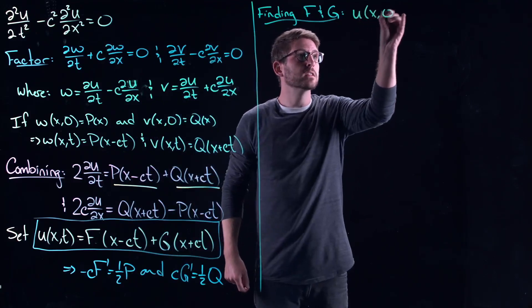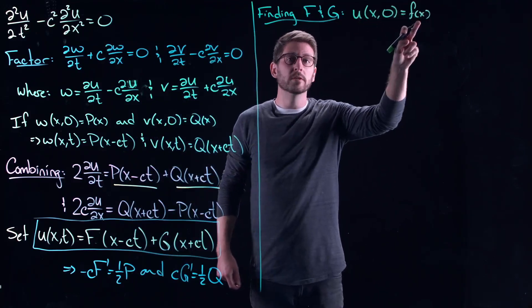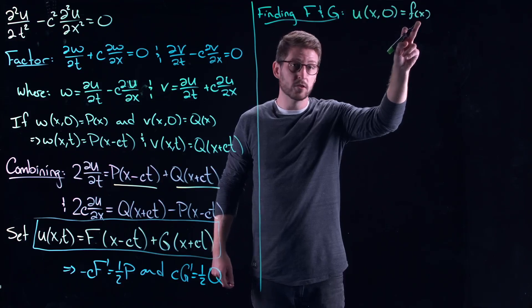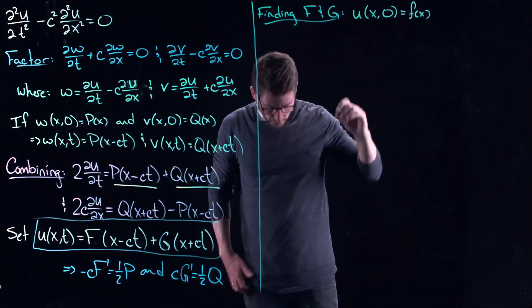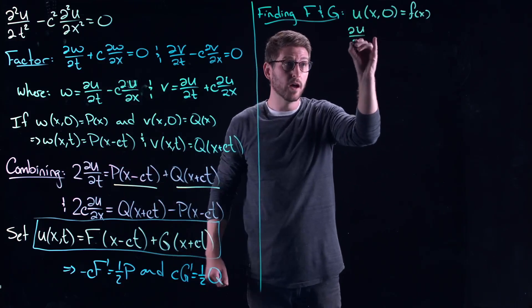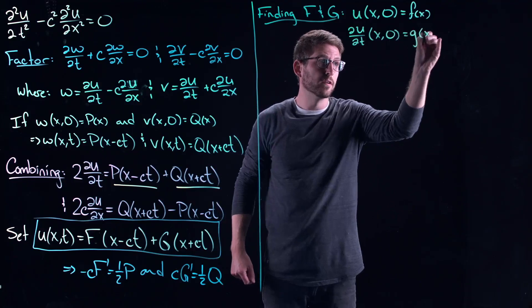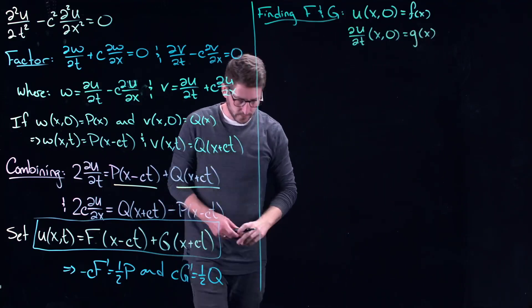So remember, you could have something that looks like this, maybe some initial disturbance of the string or whatever it is that you're modeling. As well as, because it's second order in time, you need to know what the initial velocity is everywhere in space. We'll just call that function little g of x.